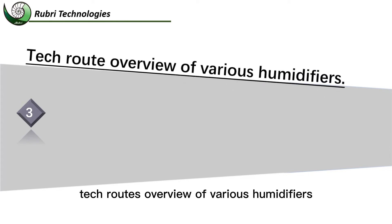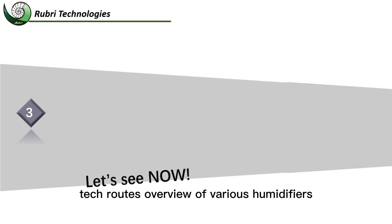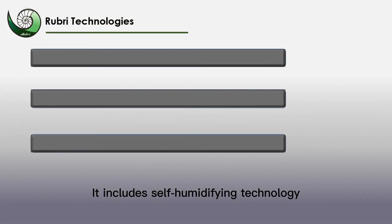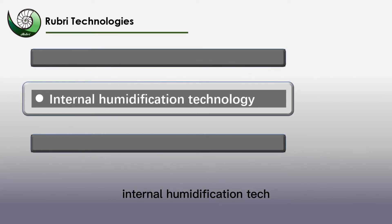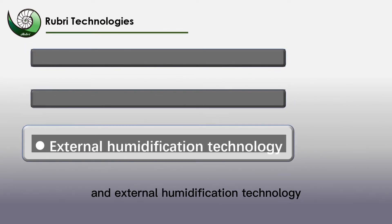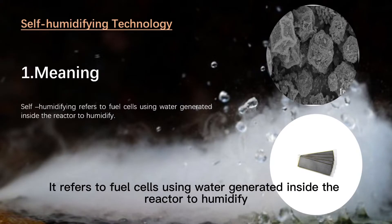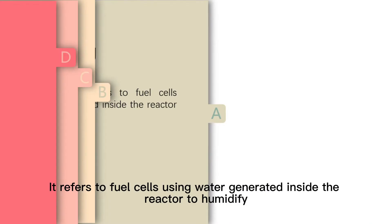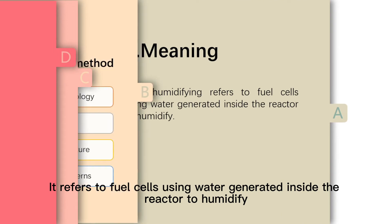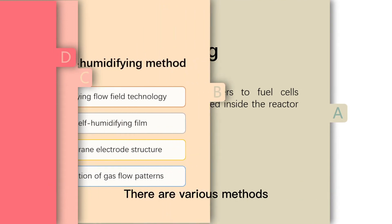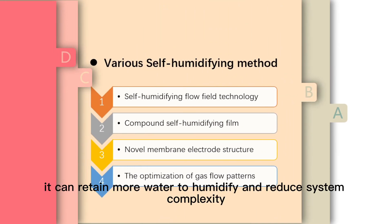Thirdly, a technology overview of various humidifiers. It includes self-humidifying technology, internal humidification technology, and external humidification technology. Self-humidification refers to fuel cells using water generated inside the reactor to humidify. There are various methods, and it can retain more water to humidify and reduce system complexity.